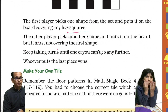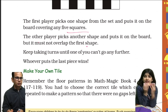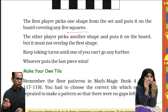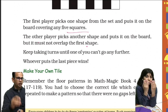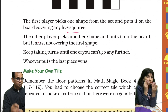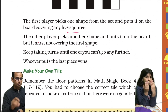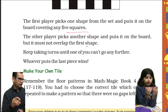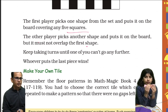The other player picks another shape and puts it on the board, but it must not overlap the first shape. The second player picks another shape and places it on the chessboard, making sure that the new shape does not overlap the first one.